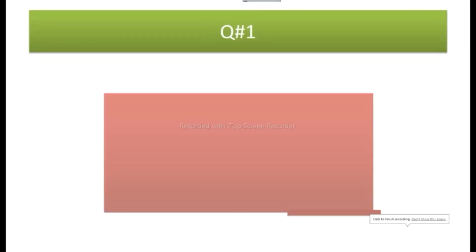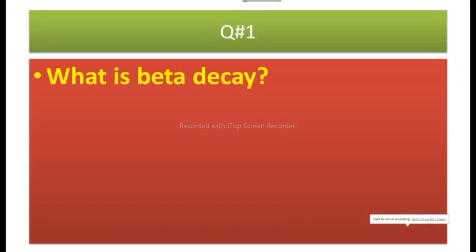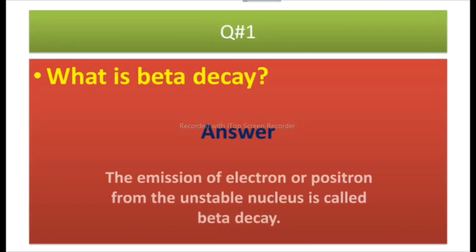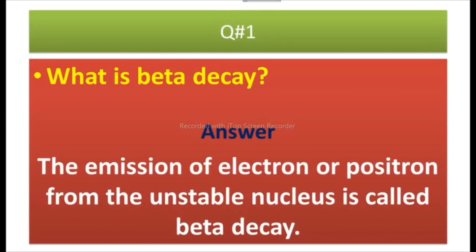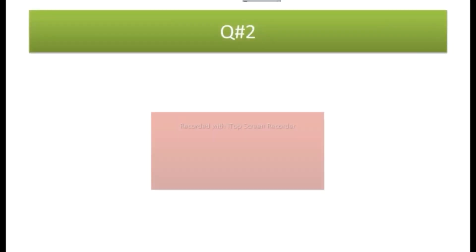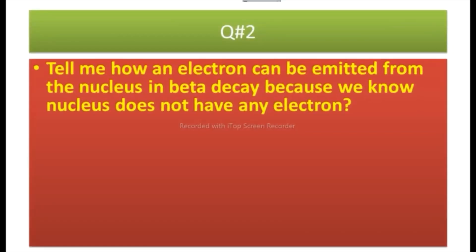Question number one: What is beta decay? Answer: The emission of an electron or positron from the unstable nucleus is called beta decay. Question number two: How can an electron be emitted from the nucleus in beta decay?